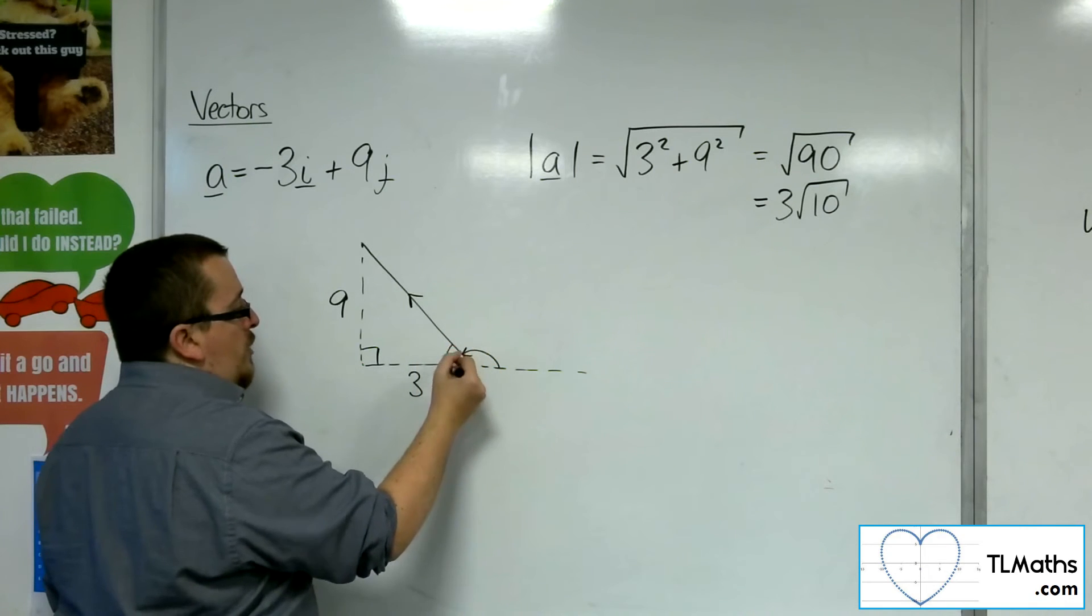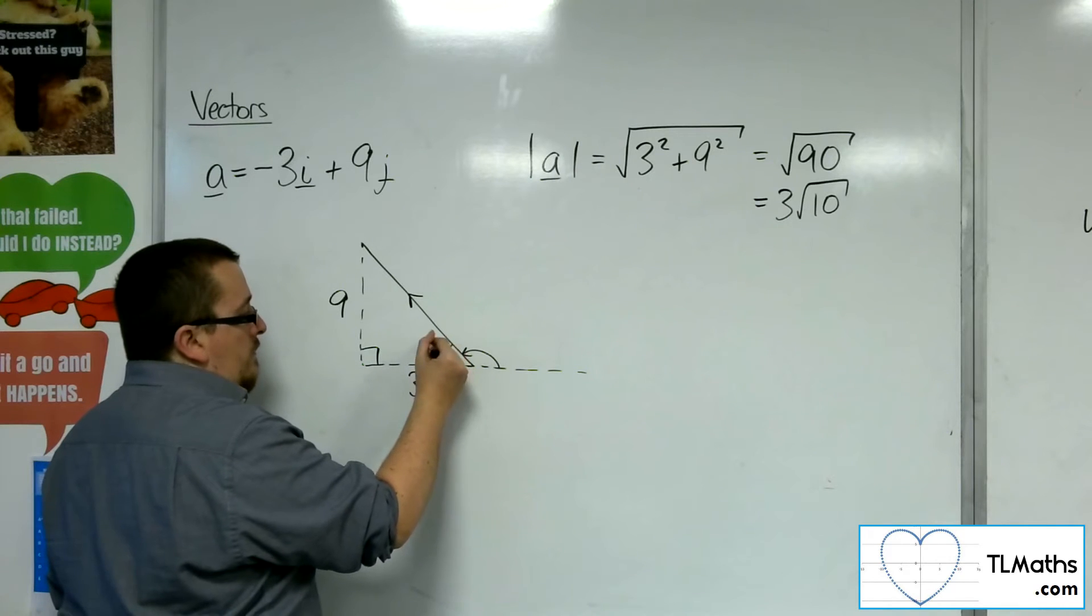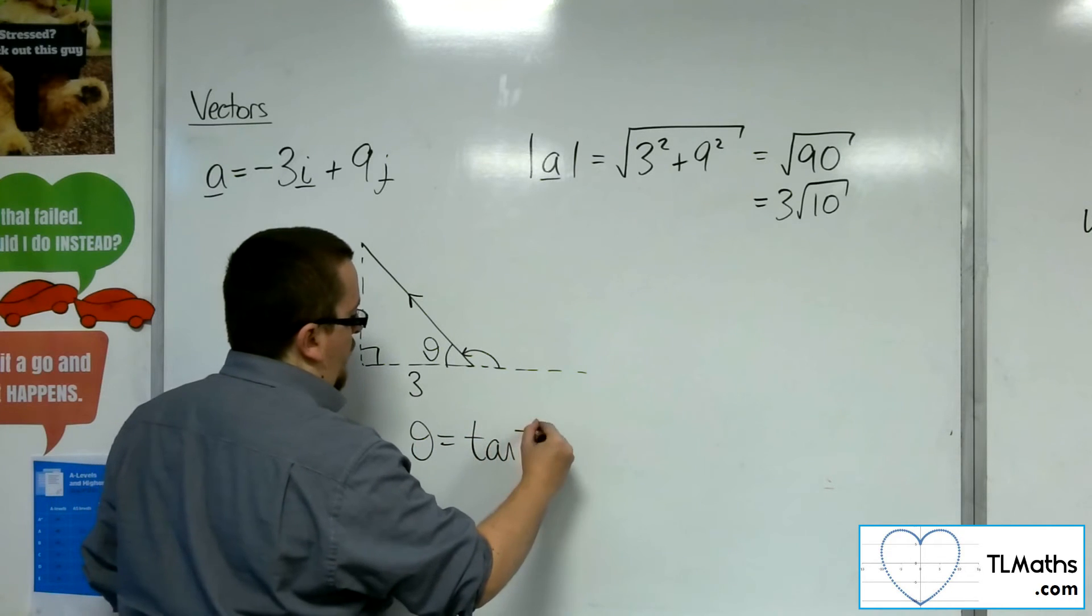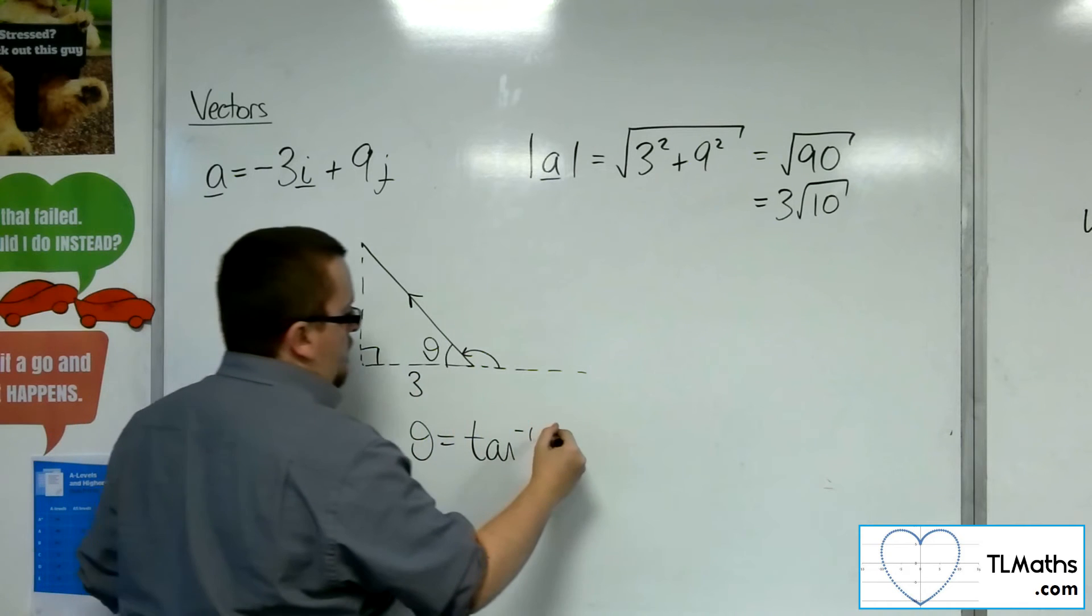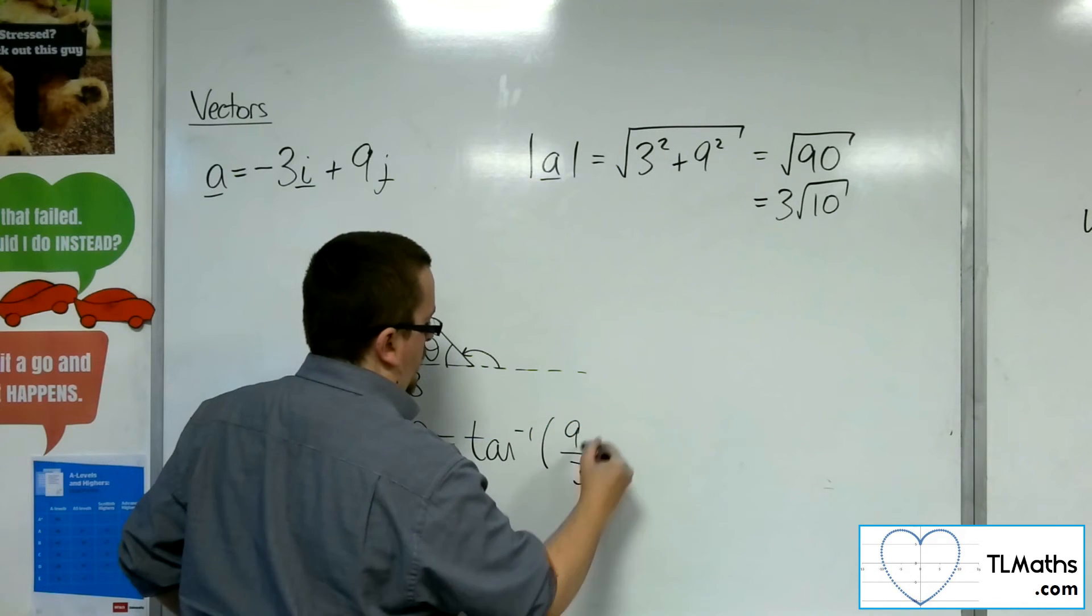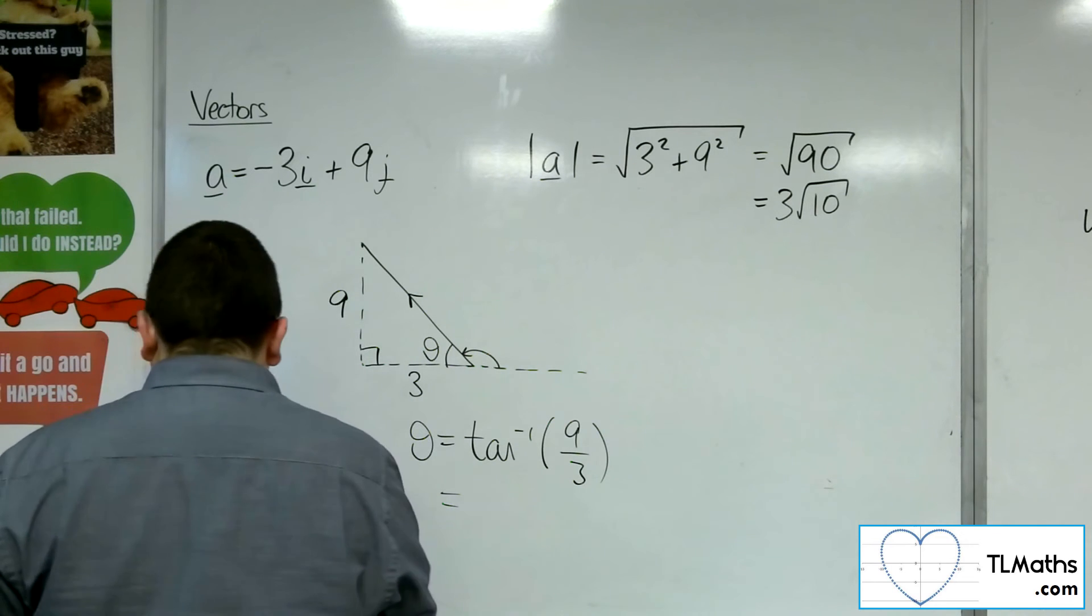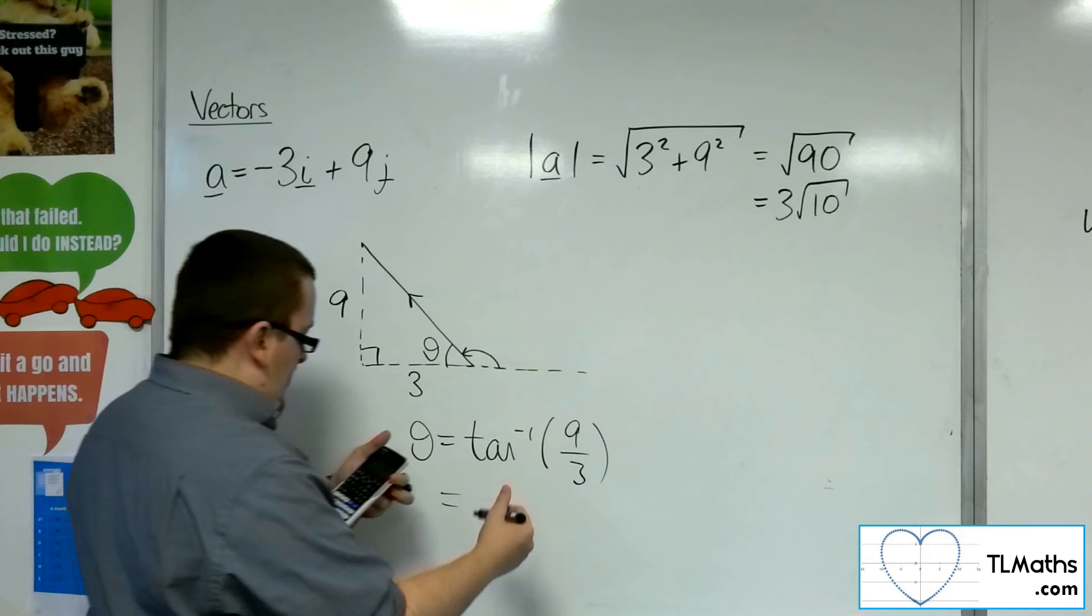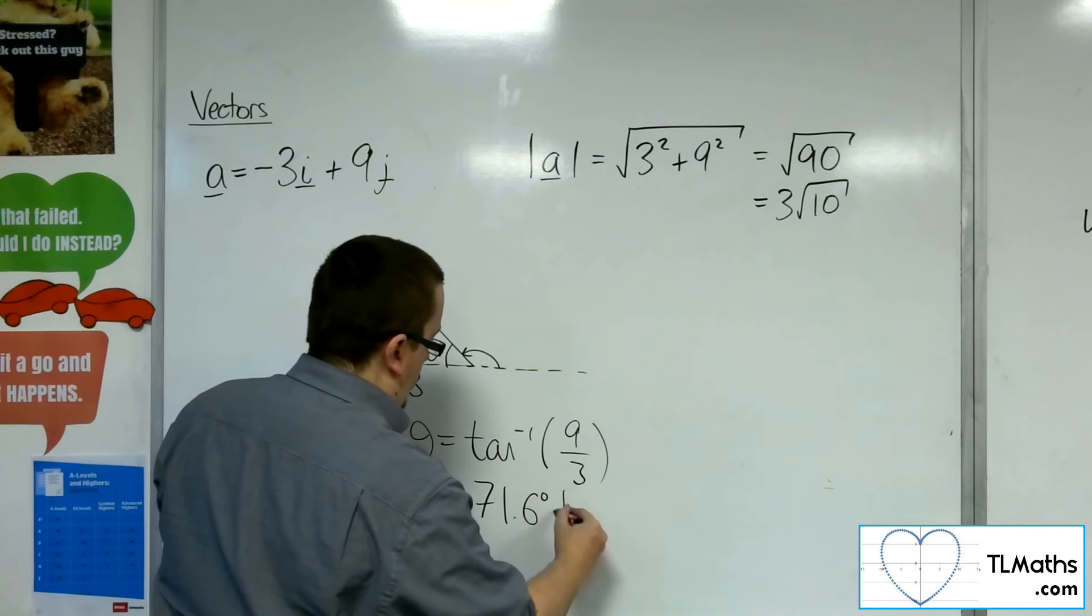OK, so if I called this one, let's say, let's call that one theta, then theta is the inverse tan of the opposite over the adjacent. So inverse tan of 9 over 3. So inverse tan of 3 is 71.6 degrees to 3 sig fig.